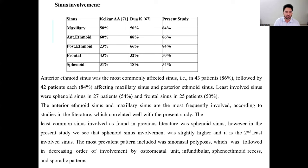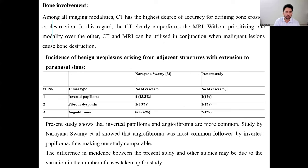The most prevalent pattern was sinonasal polyposis, followed in decreasing order of involvement by osteomeatal unit, infundibular, ethmoid recession, and sporadic pattern. Regarding bone involvement, inverted papilloma and angiofibroma were the most commonly studied, with angiofibroma most commonly followed by inverted papilloma, making the study comparable. The difference in incidence between the present study and other studies may be due to variation in the number of cases.